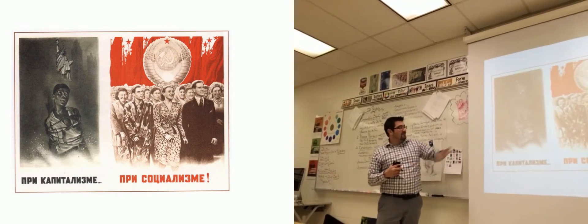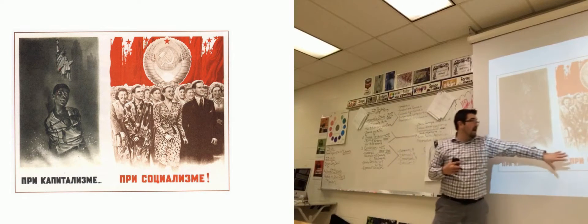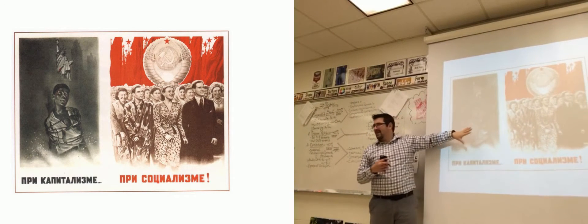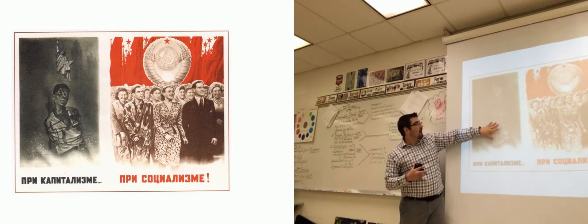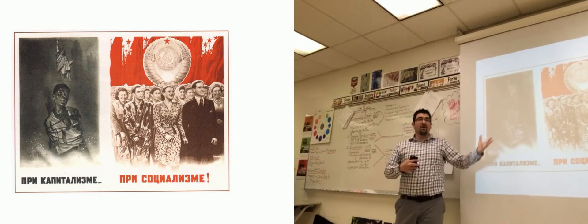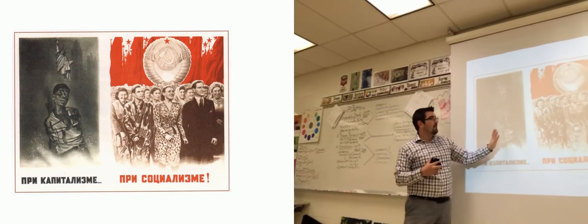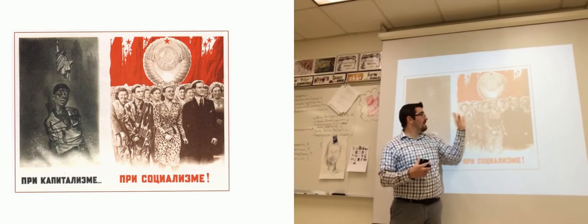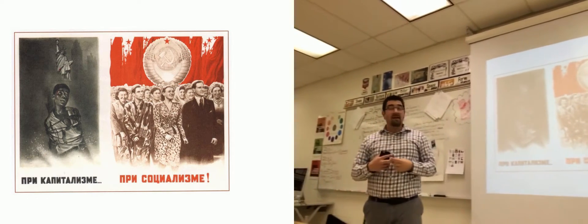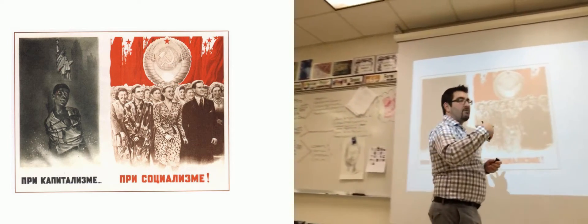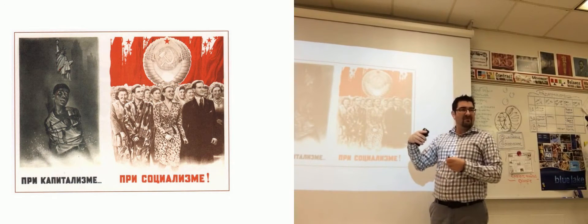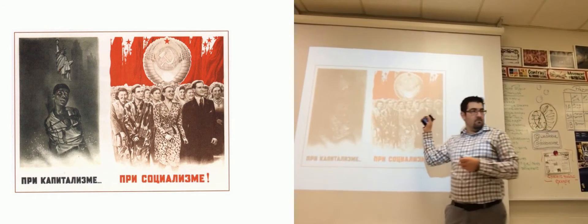Here's another one comparing capitalism and communism. Under capitalism, there's an African American who's kind of beaten, tied up, looking like he's been hung — a victim of lynching in America, one of hundreds and hundreds of people that suffered that fate. Under communism, everybody's together, all different kinds of people looking successful. Joseph Stalin was trying to let African Americans in the United States know that there's something better out there for them, that the United States maybe is not the best way to go.